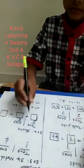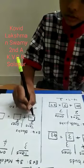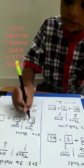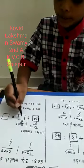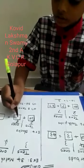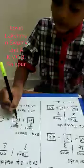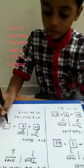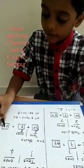8 ones. 2 tens means 20 plus 8 ones equals 28.